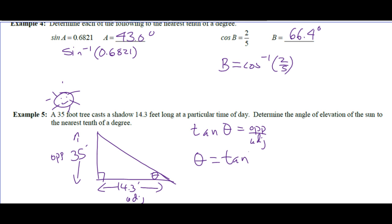Theta will be the inverse tan. We fill in the numbers: inverse tan of 35 divided by 14.3. You plug that into your calculator, and theta is equal to 67.8 degrees.